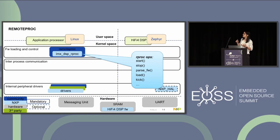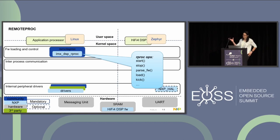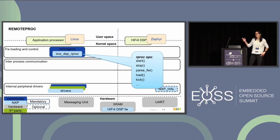In our case, in IMX DSP RProc, we had to implement the start and stop functions, the parse firmware and load firmware functions because we have a write restriction on the DSP, and the kick method — because this notifies the coprocessor that a message is available through mailbox.